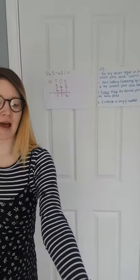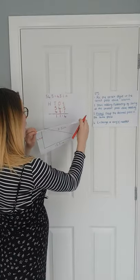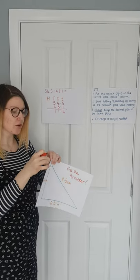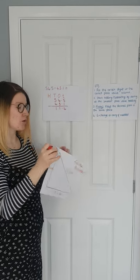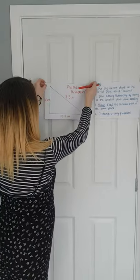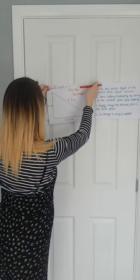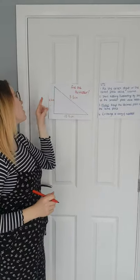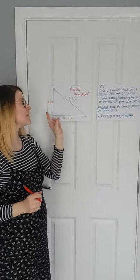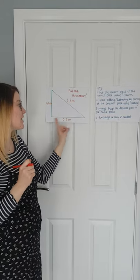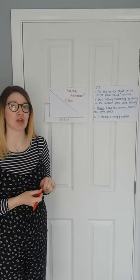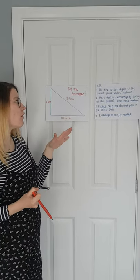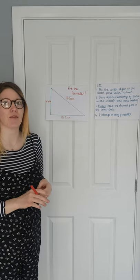Now we are going to do a bit of a word problem. We've got a triangle here and we need to find the perimeter of the triangle. This side is 4.4 centimetres, this side is 8.5 centimetres, and the side at the bottom is 10.2 centimetres. So what do you think we need to do to find the perimeter of this shape? How do we work out this calculation?